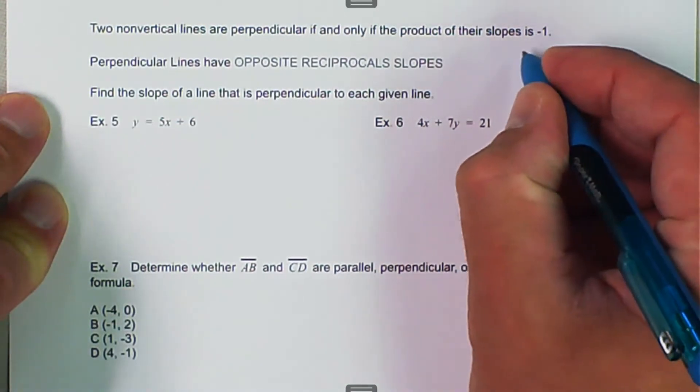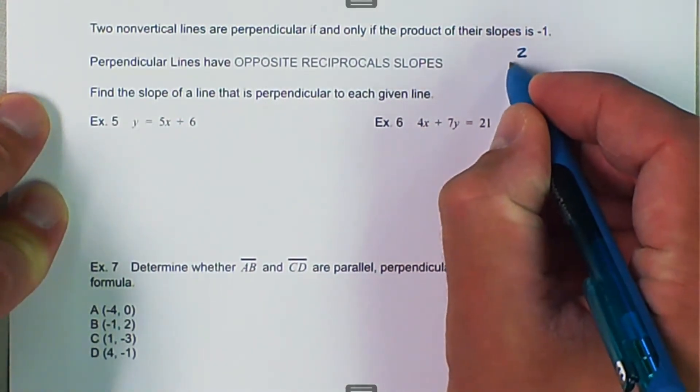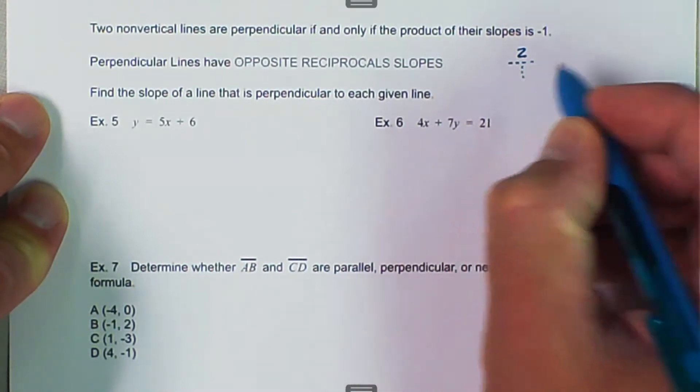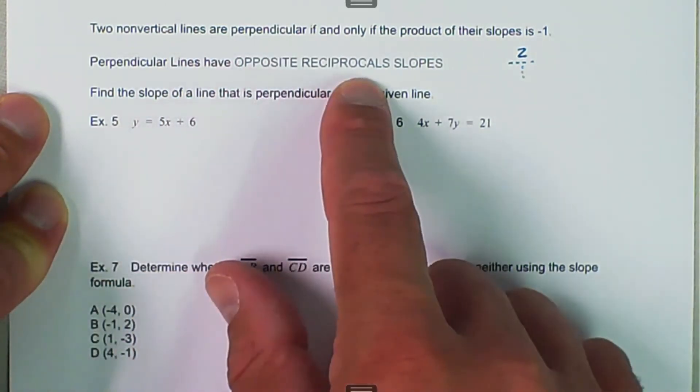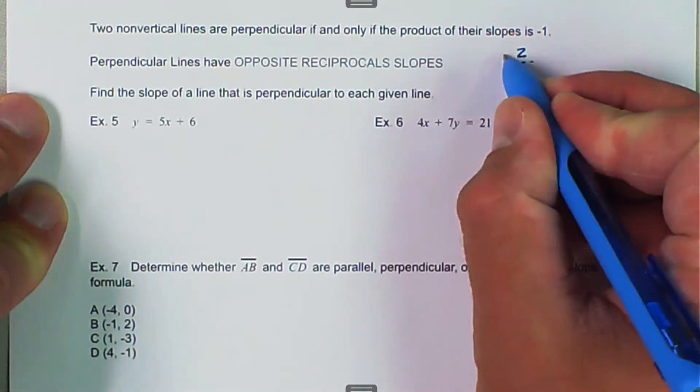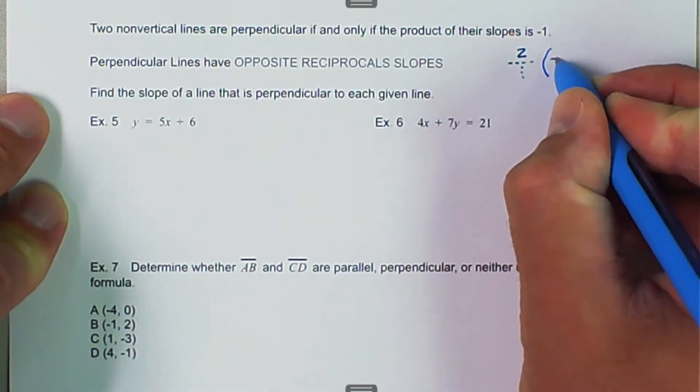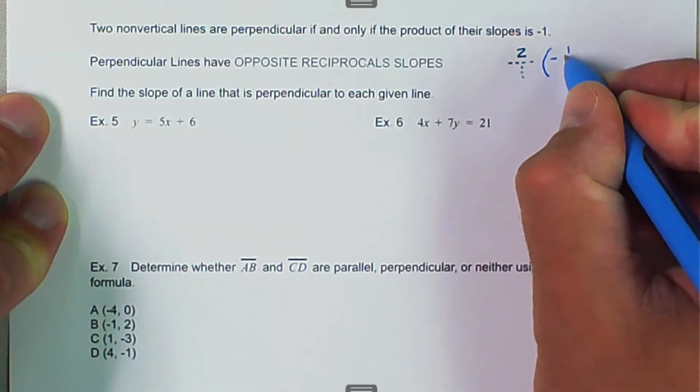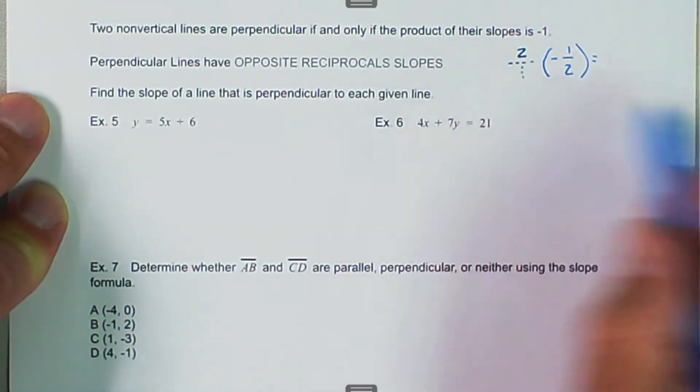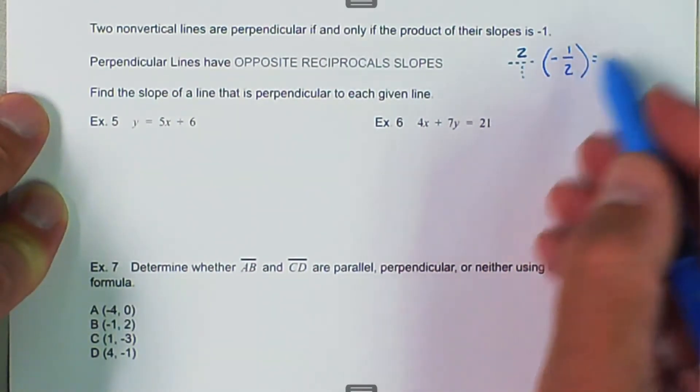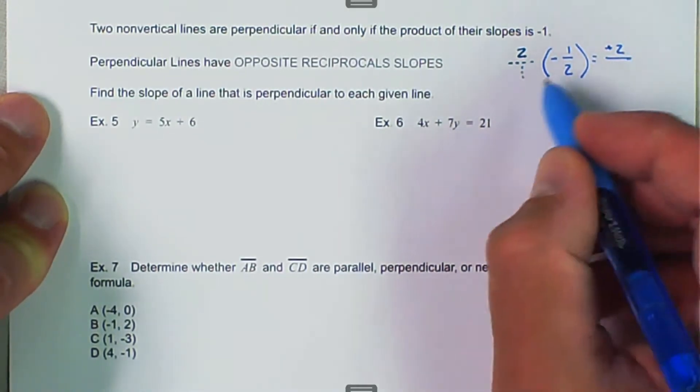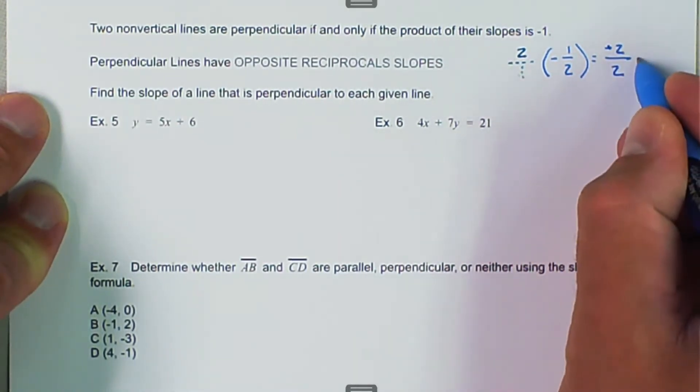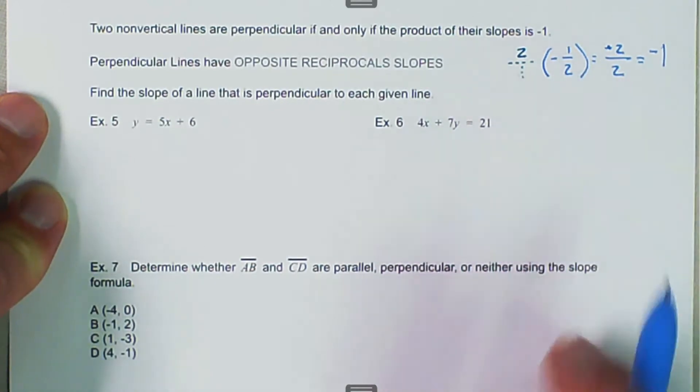So if we had one slope that was two, and remember if it's two we understand that it's two over one. The perpendicular would be opposite reciprocal. So this is positive, so opposite of positive is negative, and reciprocal means flip, so one over two. If we multiply these two fractions together, two times negative one is negative two, and one times two is two. Negative two divided by two is equal to negative one. So these two slopes are perpendicular.